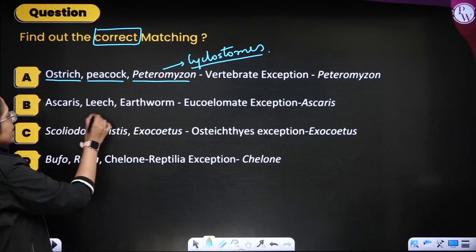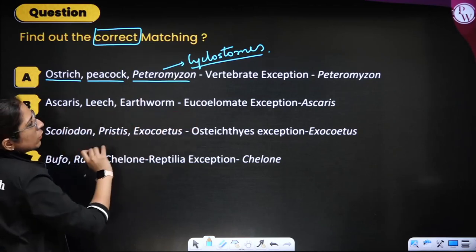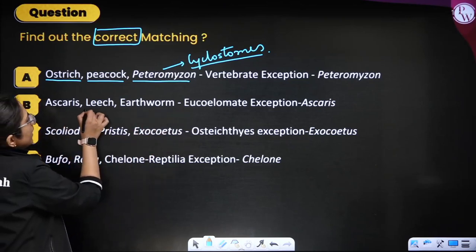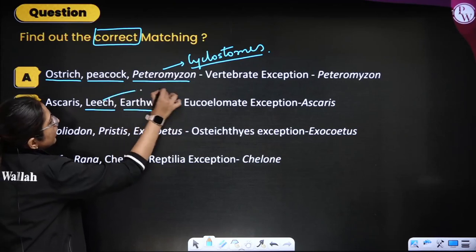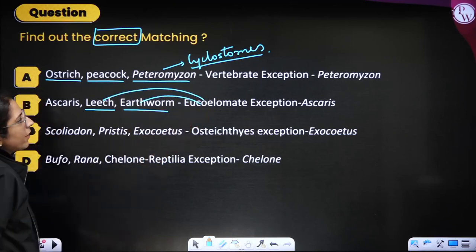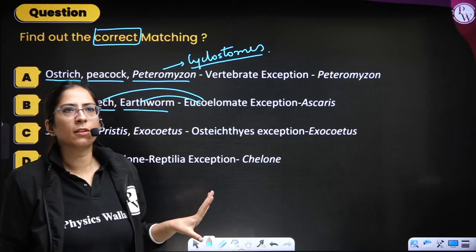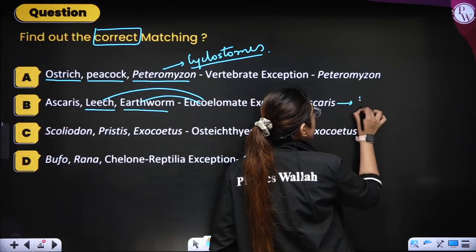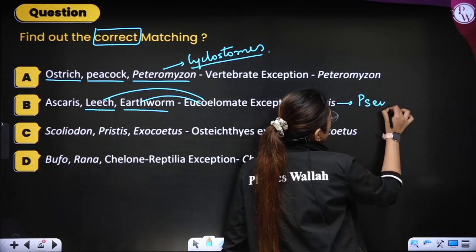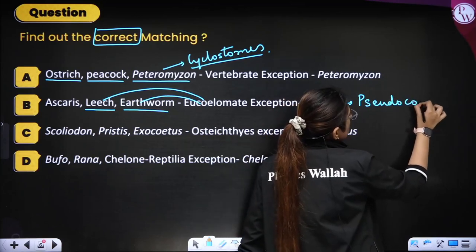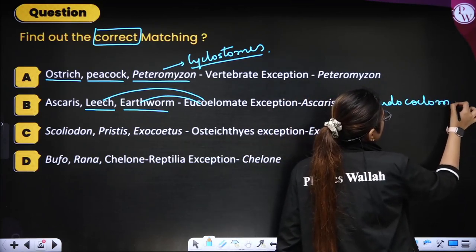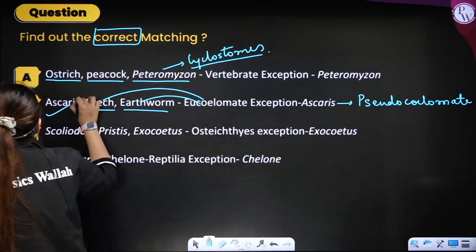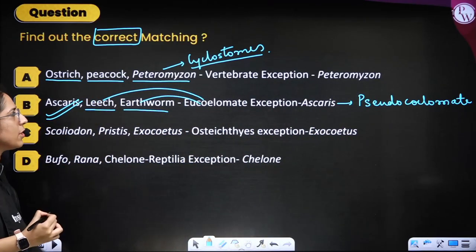Second option: Ascaris, leech, and earthworm are eucoelomates, except Ascaris. That means leech and earthworm are eucoelomate whereas Ascaris (roundworm) is not — Ascaris is a pseudocoelomate. This is absolutely right. We will go for this option.